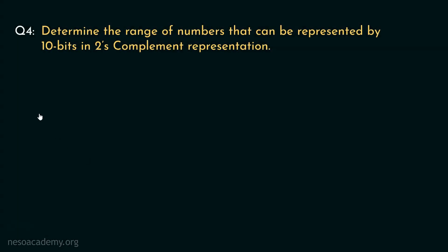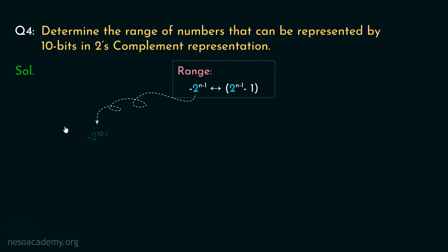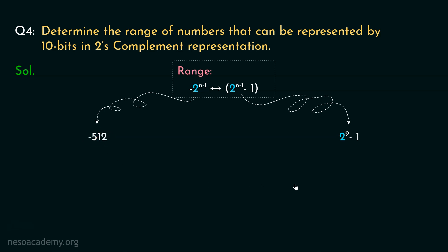Let's move on to the last question of the session: determine the range of numbers that can be represented by 10 bits in 2's complement representation. Using the range formula with n = 10, the least value is minus 2^(10−1) = minus 2^9 = minus 512, and the maximum value is 2^9 − 1 = 512 − 1 = 511. So using 10 bits, we can represent the range from minus 512 to 511.